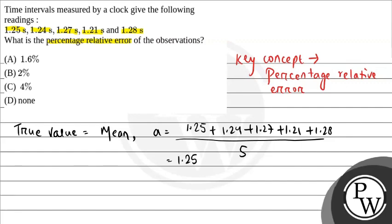Now we need to find the error in each reading. The error comes from comparison with the true value. So delta A1 equals 1.25, which is our true value, minus 1.25, which is the value of A1. So this will be equals to 0. Similarly,